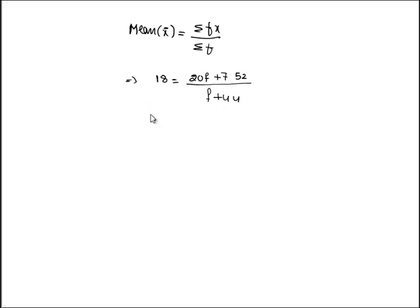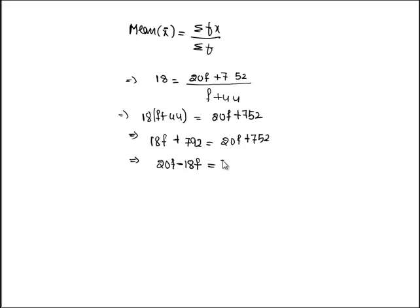Transposing the denominator to the left hand side, we get 18 times f plus 44 equals 20f plus 752. Multiplying 18 with this bracket we get 18f plus 792 equals 20f plus 752. Transposing f to one side and numericals to the other side, we get 20f minus 18f equals 792 minus 752.